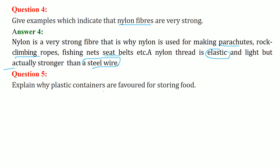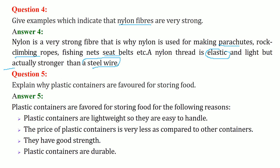Explain why plastic containers are favored for storing food. Note that prolonged use, especially with warm or hot food, is discouraged. But the answer is: plastic containers are favored because they are lightweight, easy to handle, less expensive compared to other containers, have good strength, and are durable.